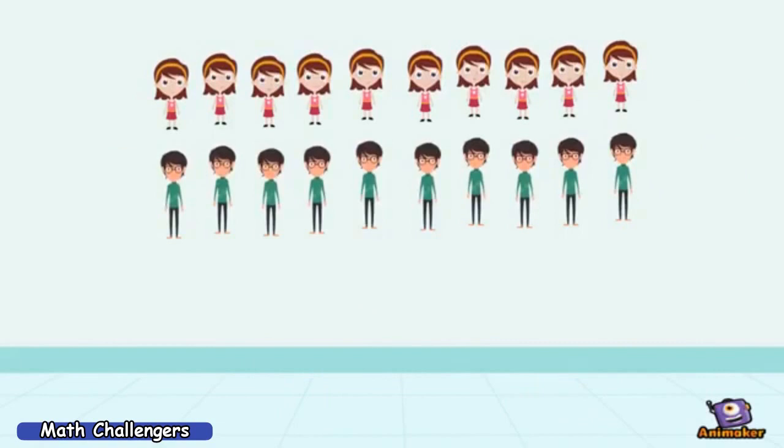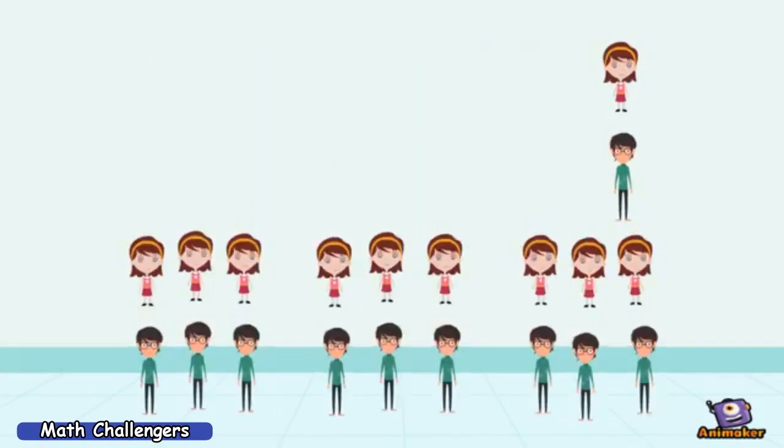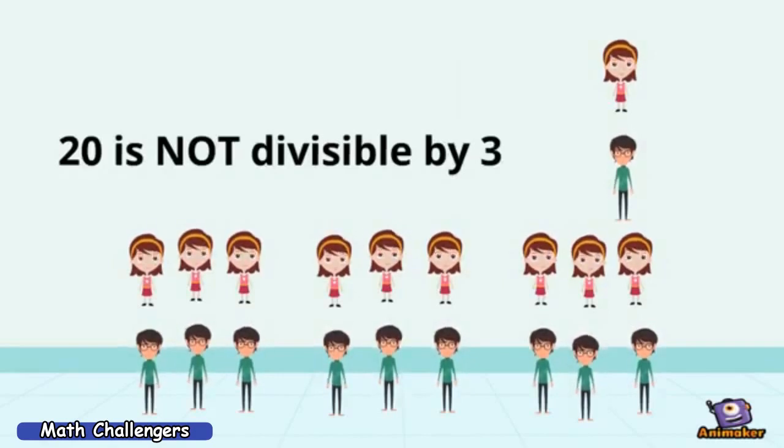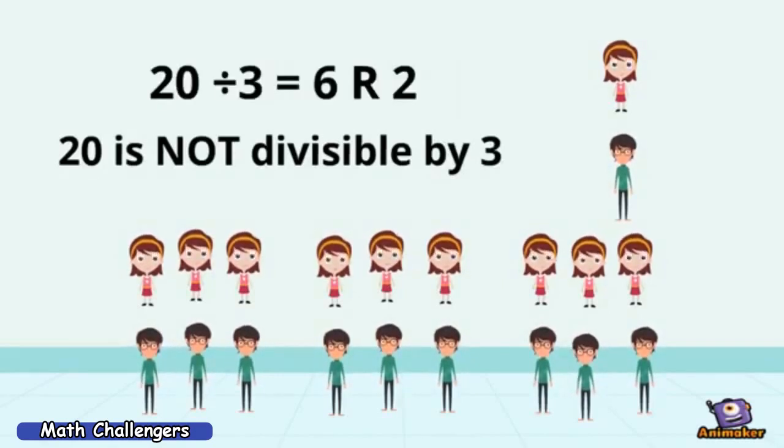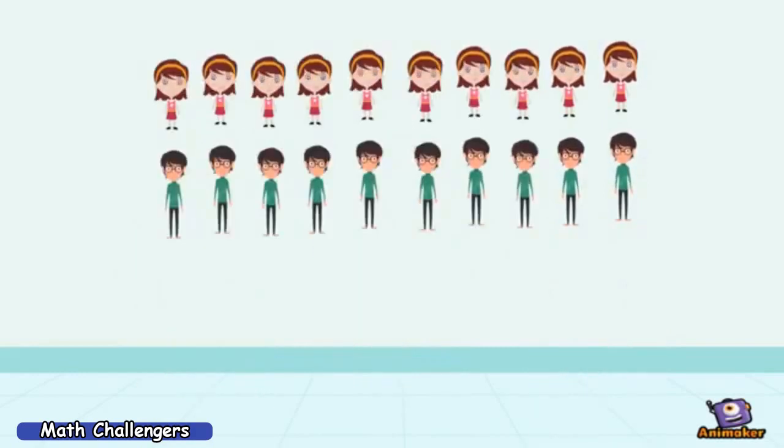How about if the 20 students are divided into three groups? How many members were there in each group? There are six equal members in each group with an excess of two students. Therefore, 20 is not divisible by 3. Because when 20 is divided by 3, the answer is 6, but there is a remainder of 2.